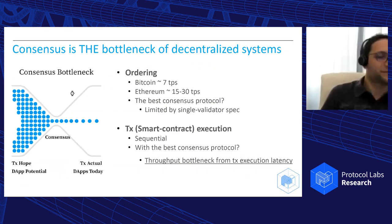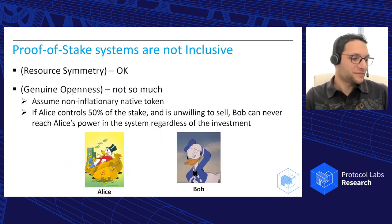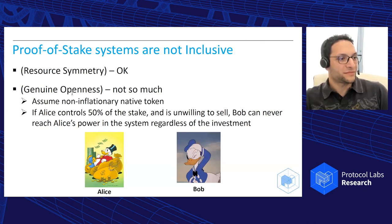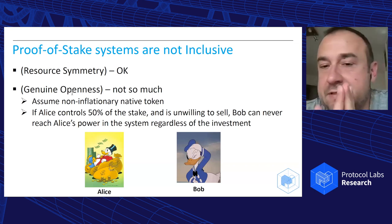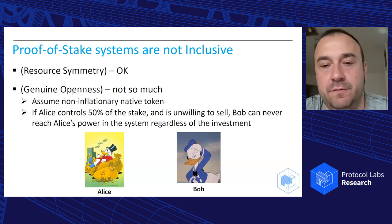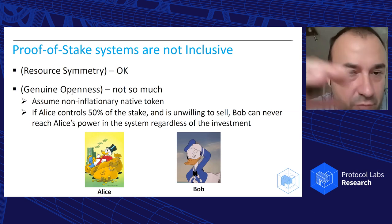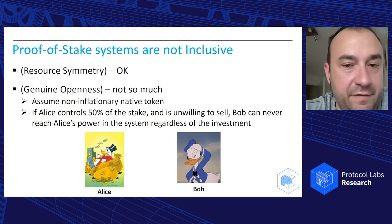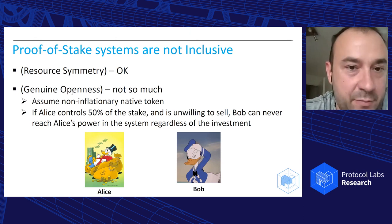Q&A: In the definition of genuine openness for proof of stake, the antecedent was that a person holding non-inflationary tokens might not sell to a newcomer. But by not selling, isn't that person depreciating the value of the token and harming themselves? Should there be some crypto-economics flavor in the definition of genuine openness? — The main difference I want to highlight: if I hold 50% of the stake and I'm not willing to sell, that's different from me holding 50% of mining power, where I cannot prevent you from bringing the same amount of mining power into a proof-of-work system.